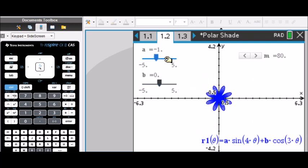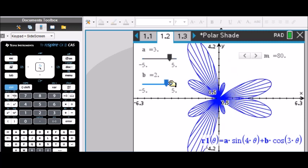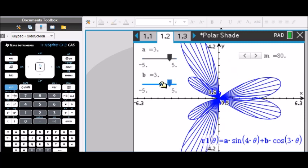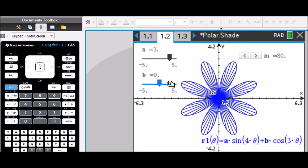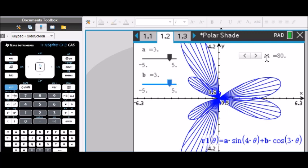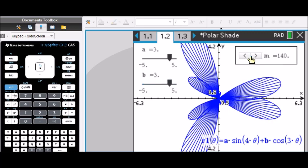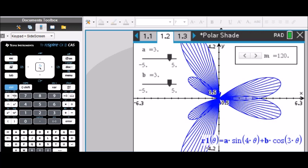So as you alter these two parameters, you can quickly change your polar curve. Beautiful. And what do we have here? Okay. So this is how many lines we are drawing here. Beautiful.